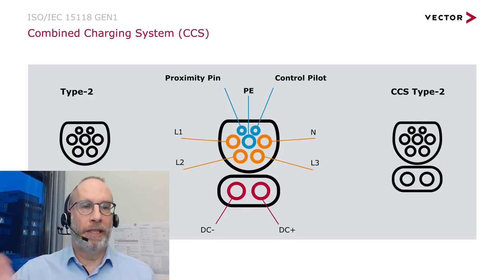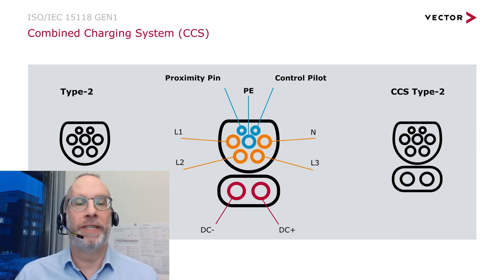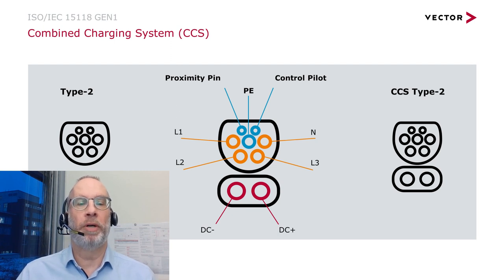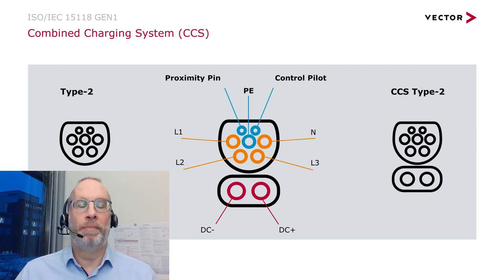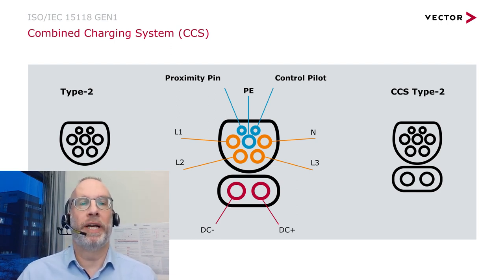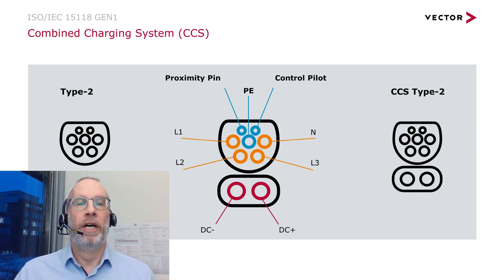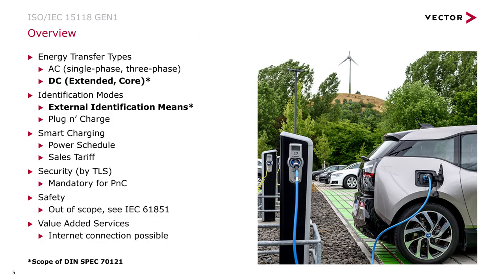Looking directly at the connector itself, on the upper side we have the AC part with L1, L2, L3, neutral, the physical earth, and the communication pins — proximity and control pilot. On the lower part, we have the two DC pins. Together, this is basically the combined charging connector described here.